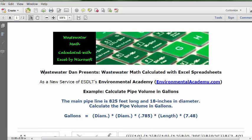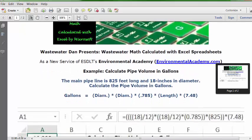Gallons equals diameter in feet times diameter in feet, times the conversion factor for the surface area of a square to the surface area of a circle, which is 0.785, times the length of the pipe, which is the length in which there is water, that's in feet, times the conversion factor from cubic feet to gallons. So that's the formula: Gallons equals diameter times diameter times 0.785 times length times 7.48. Let's see how we insert that in an Excel spreadsheet.